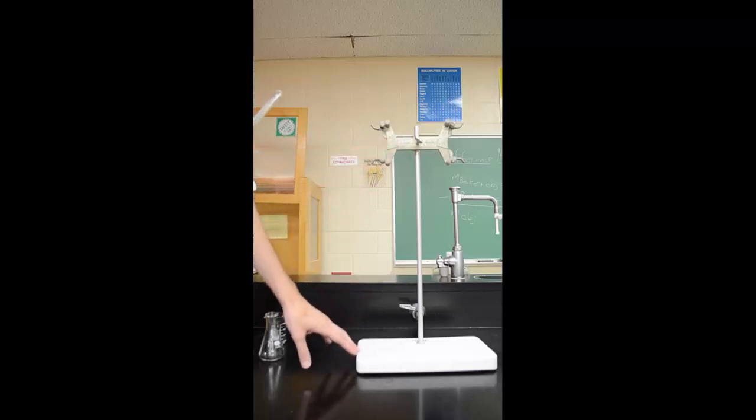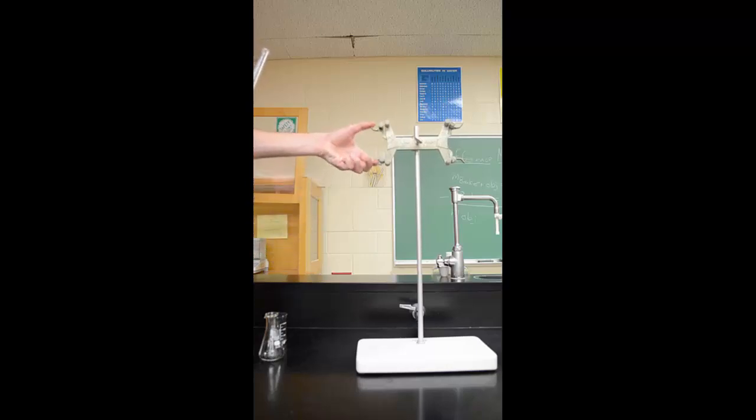First of all, we need a stand. These are around the lab, so make sure you grab one. The stand has a clamp on both sides, but we're just going to use one side. You take the burette, put it into the grooves, and then let go. It's held in just by the pressure of those springs.